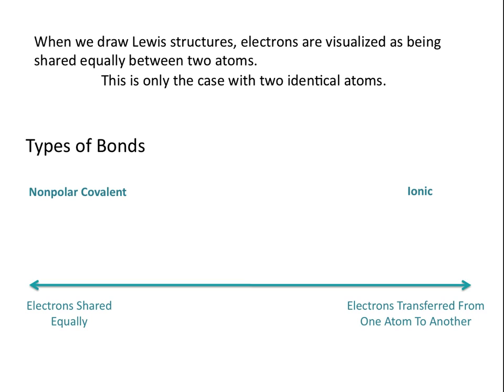Normally when you start talking about bonding, you talk about ionic bonds, where electrons are essentially transferred from one atom to another, and you talk about covalent bonds, where electrons are shared between two atoms. And we're going to expand on the definition of a covalent bond today.